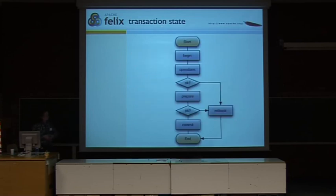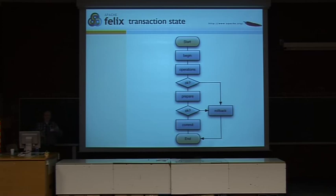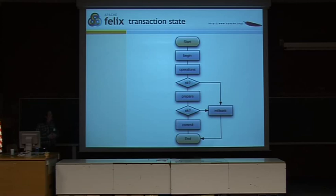Just a brief look at how the transactional mechanism works. It's not rocket science — it's basically a two-phase commit. If you install a deployment package, you start at the beginning, everybody gets a chance to initialize. As soon as that works out, you go into a prepare phase, where everybody is asked if they can prepare the change. If that works, you get the actual commit and everybody commits what they've been doing. If anything anywhere goes wrong, you go into a rollback and everything gets rolled back to its original state. Finally, the transaction ends.